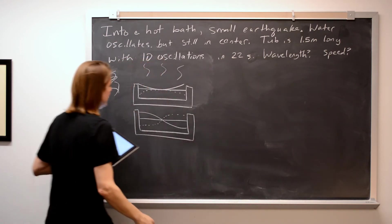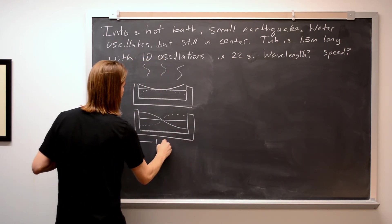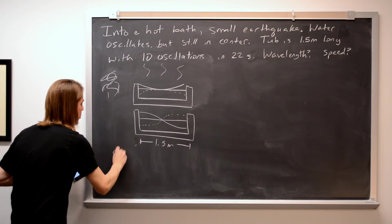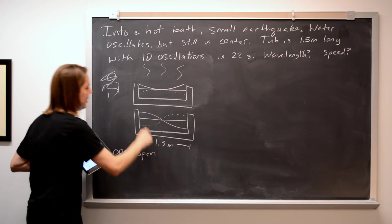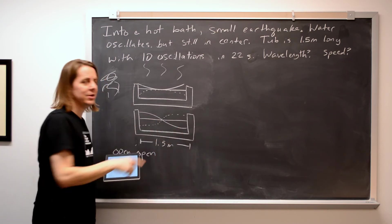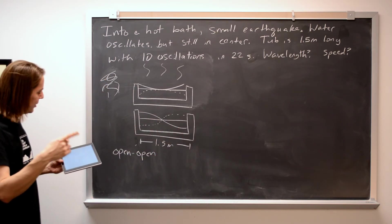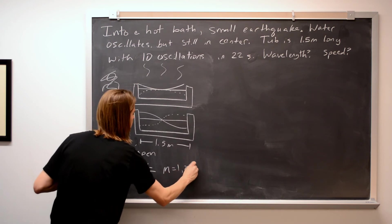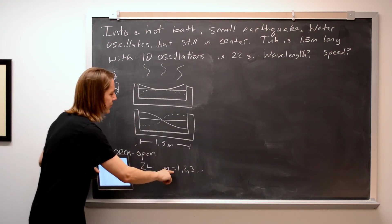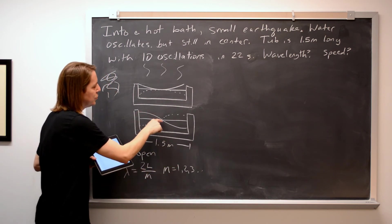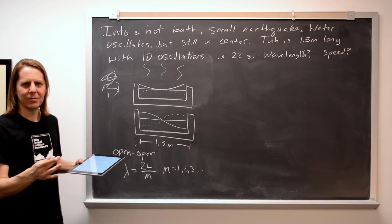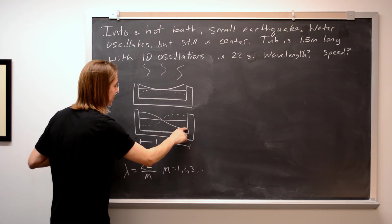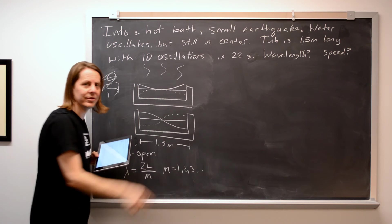So the first question is: what is the wavelength? This is basically an open-open system — the water is free to move and have large amplitude on the ends. We've put a node in the middle, so we're at the fundamental wavelength. The wavelengths of an open-open system are 2L over M, where M equals 1, 2, 3, and so on. We know this is M equals 1 because there's no shorter or longer wavelength that would work — this goes from one maximum to another maximum.